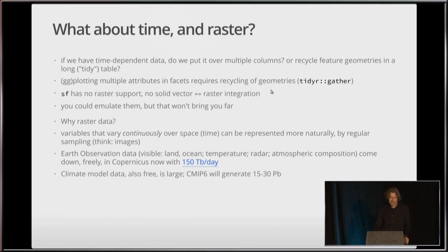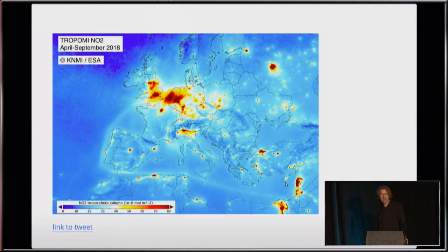Also climate data, climate model data is also free and large. The climate decoupled model intercomparison program will generate around six years, will generate 15 to 30 petabytes. That's a data center, I imagine. And there are numerous other sources of raster data that are of interest. And that is also what really motivates me, that there is so incredibly much free information that is collected or generated that you could get access to and use if you could use it. But it is so hard to do it quite often. So here's an example of an image that comes from the Sentinel-5P where six months of data were thrown together.